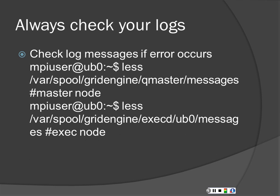Always check your logs. The path /var/spool/gridengine/qmaster/messages will give you all the messages for the master node. And /var/spool/gridengine/execd will give you it for the slave nodes. There's a difference in how it looks — the master node has a master index of all the logs, but sometimes the slaves will catch something that needed to be caught along the way.